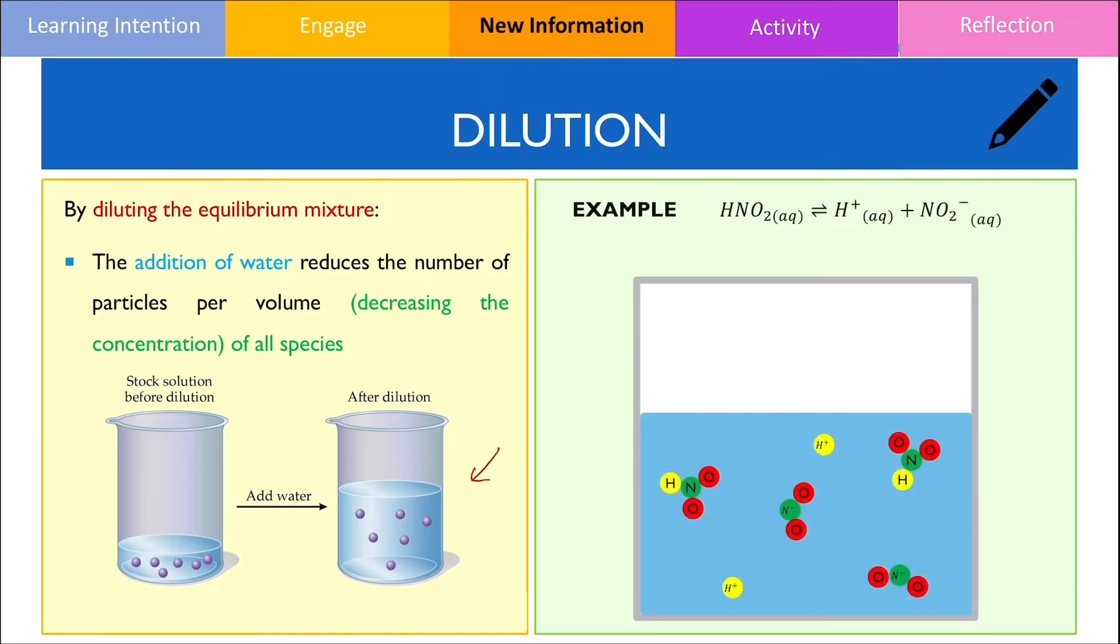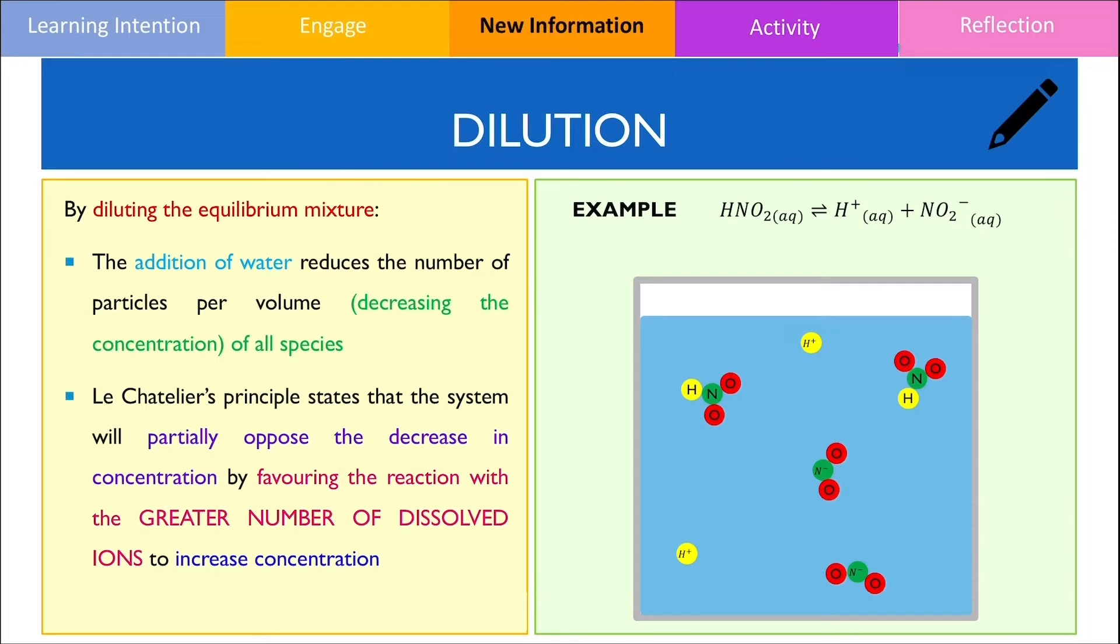If the following reaction mixture was already in equilibrium and water was added, the concentration of each of these ions decreases due to the increased volume. To counteract this change, Le Chatelier's principle states that it will partially oppose the sudden drop in concentration by favouring the reaction with the greater number of dissolved ions in an attempt to increase the overall concentration.